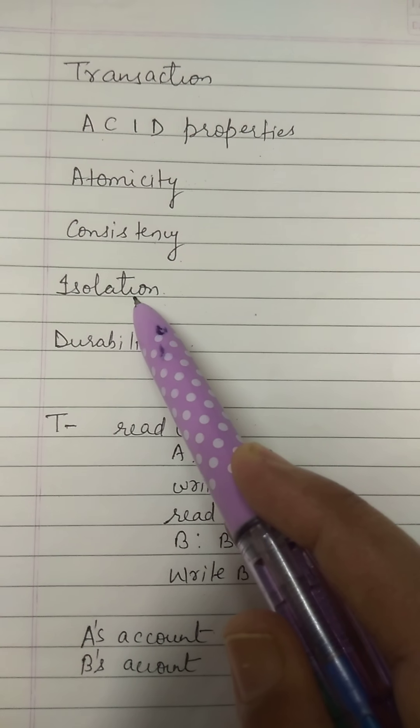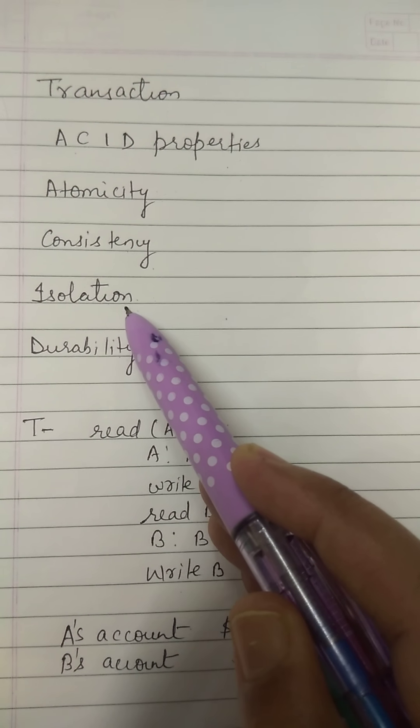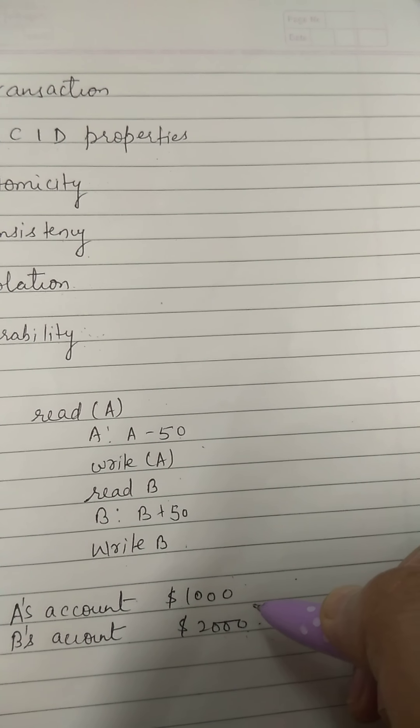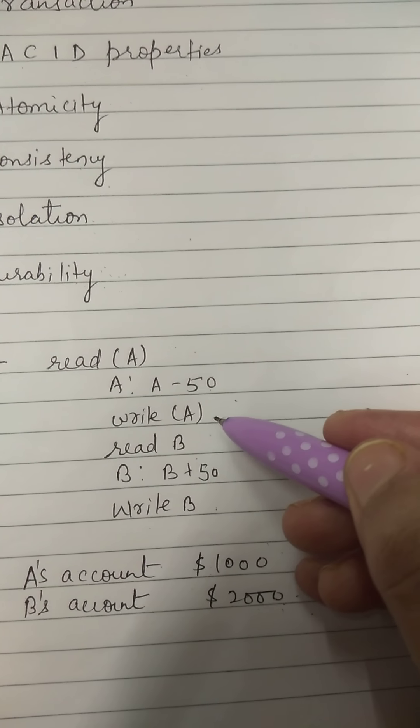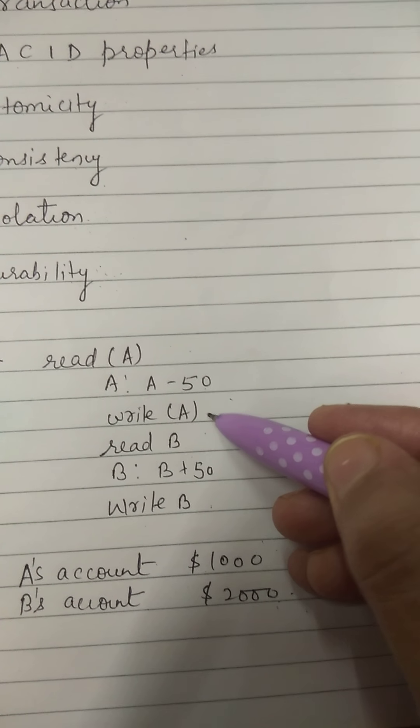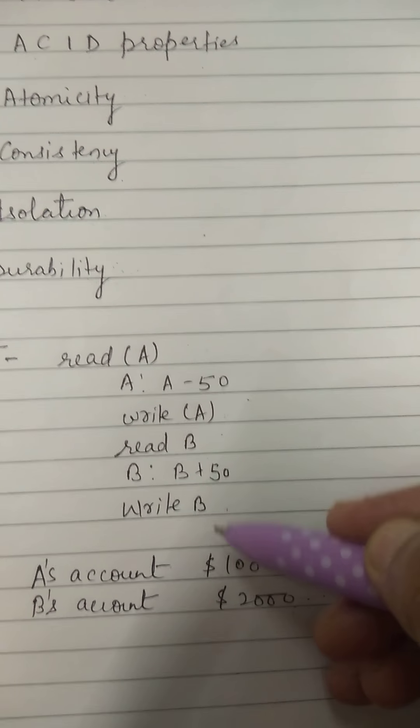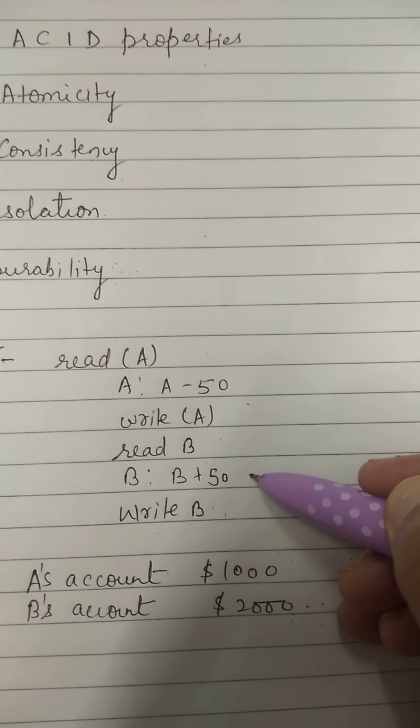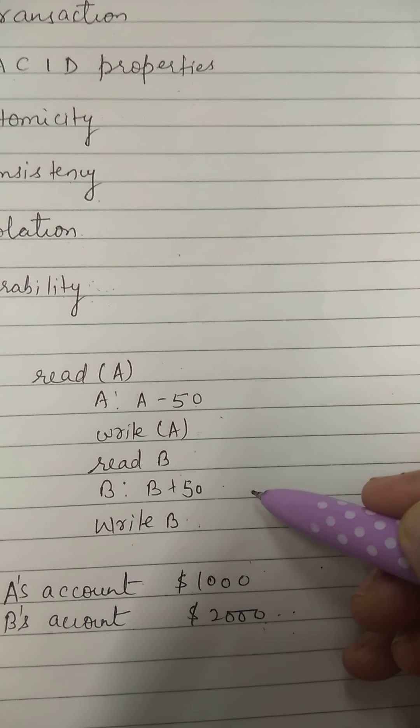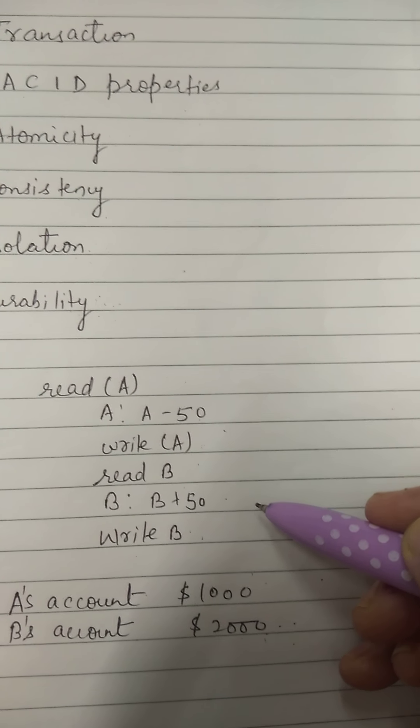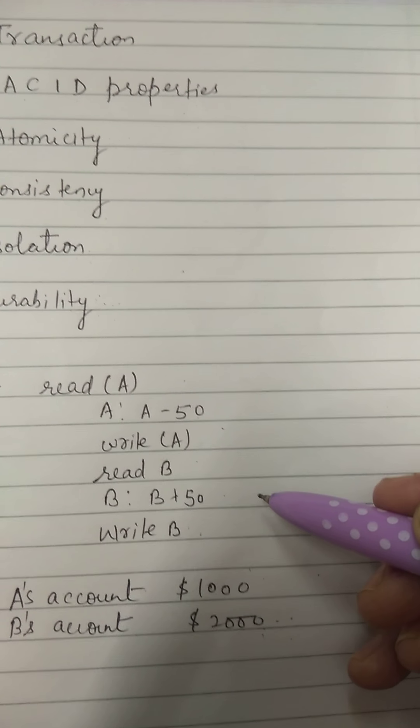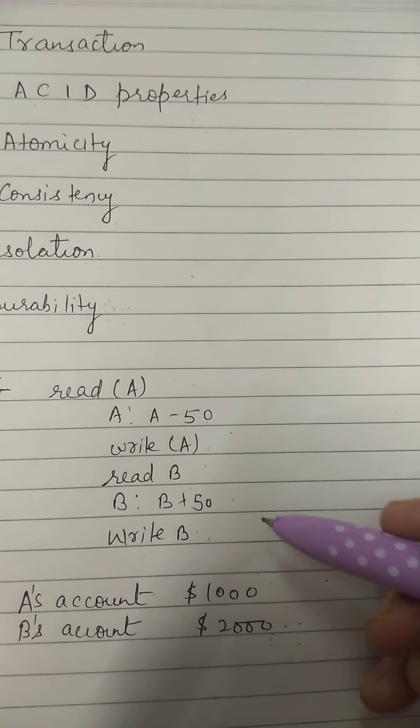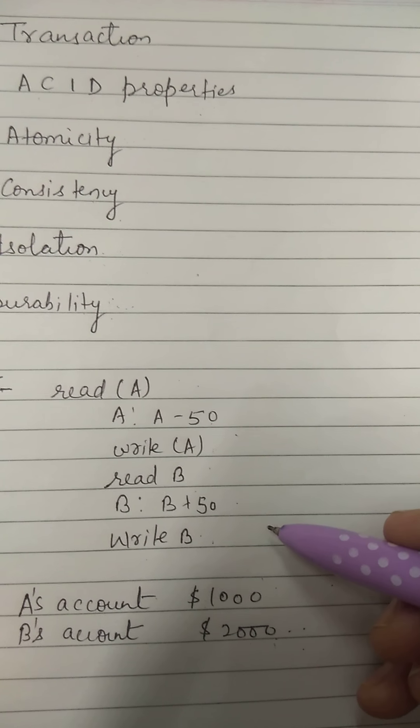And now the last property, that is isolation. Suppose the database is temporarily inconsistent while the transaction to transfer funds from A to B is in execution. Say at this step, the amount in A's account is $950, but before execution of this step, the amount in B's account is $2000. So if a second concurrent running transaction reads A and B at this intermediate point and computes A + B, it will observe an inconsistent value. So to avoid the problem of concurrent execution, transactions should be executed in isolation.